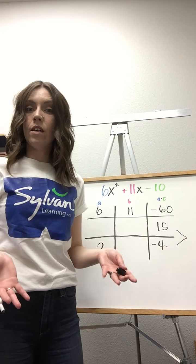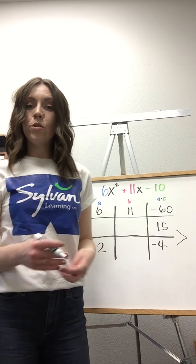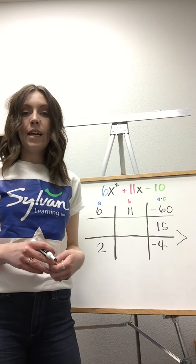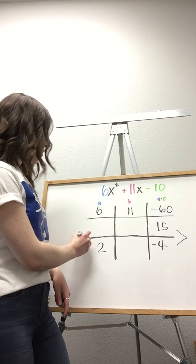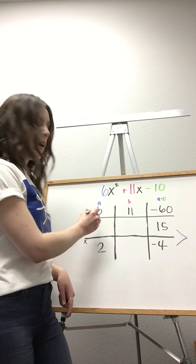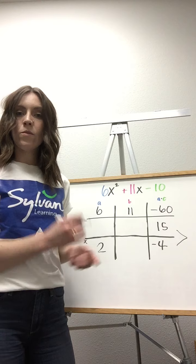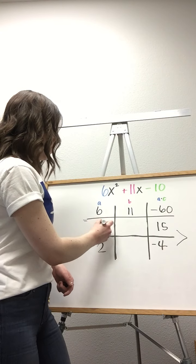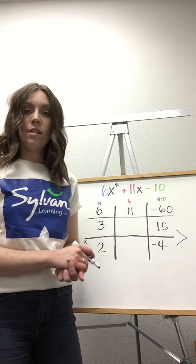Now we just need to fill in the rest of the boxes, and we'll do that by creating several multiplication sentences. We'll start by going up in our first column, and 2 times what equals 6. So I know the number 3 completes that multiplication sentence.